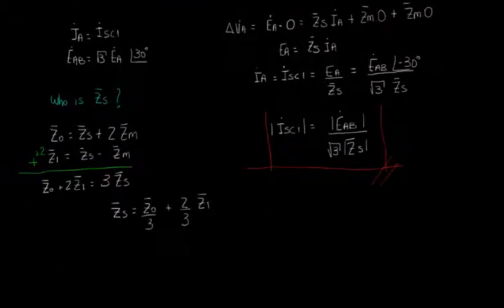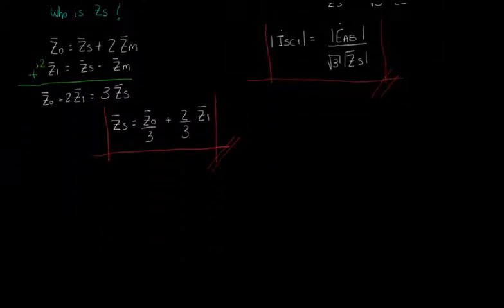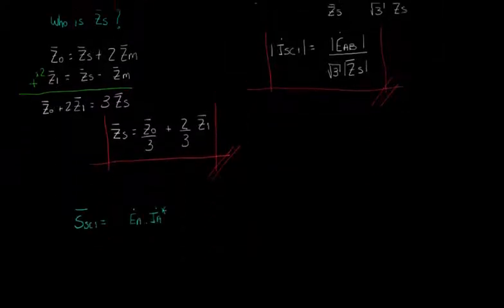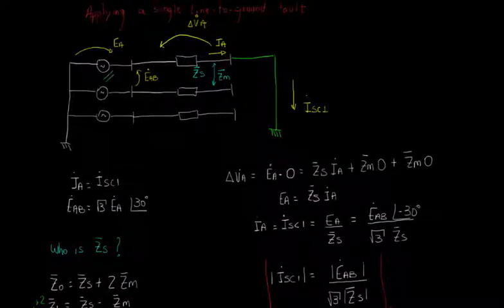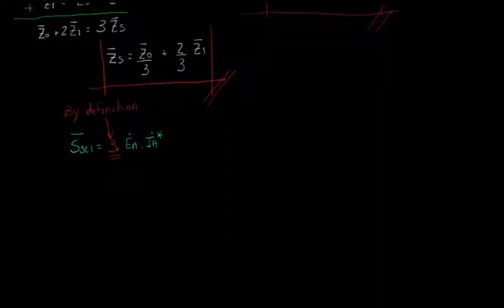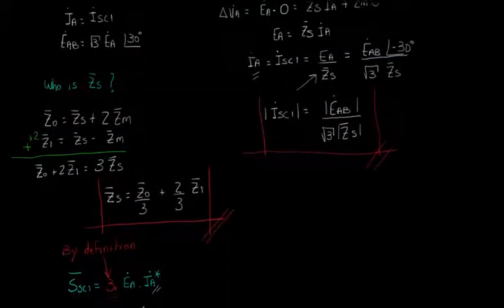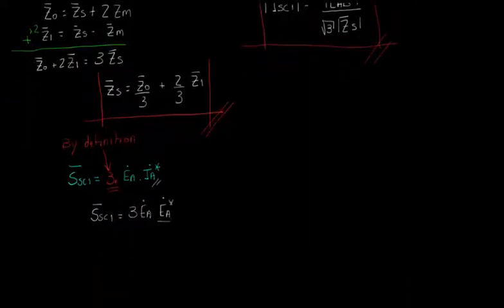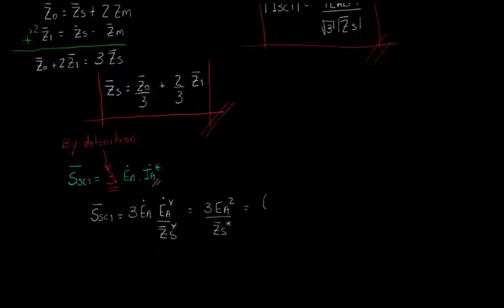Now, for the single-phase short-circuit power, we could think that it's calculated as EA times IA conjugated, because there is current in one phase only. However, by definition, it's calculated the same manner as it is in the three-phase short-circuit power. So we must put a 3 multiplying this expression. Applying the procedure of substituting the current and writing EA as function of EAB, we can find a similar expression that we have found for the module of SSC3. But instead of module of Z1, here we have module of ZS.